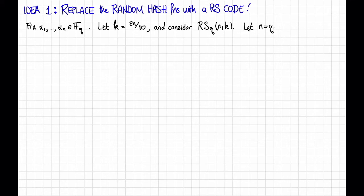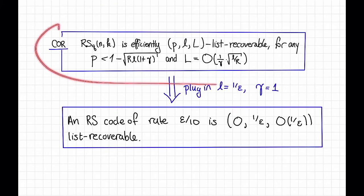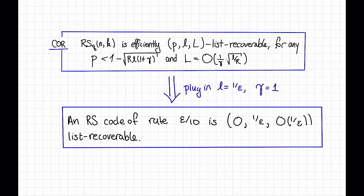If you go back and look at the theorem that we proved about list recovery of Reed-Solomon codes, you'll find that this Reed-Solomon code is efficiently list recoverable with parameters p equal to 0, l equal to 1/epsilon, little l equal to 1/epsilon, and big L on the order of 1/epsilon. Here I have a corollary we proved in a previous video, and I claim that if you plug in l equal to 1/epsilon and gamma equal to 1, you get that claim. You can pause the video and verify this. Note that the constant 10 is just a fudge factor to avoid off-by-one issues with floors and ceilings.